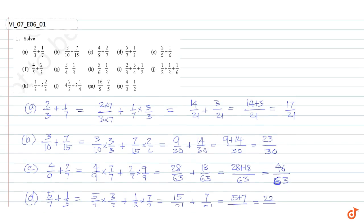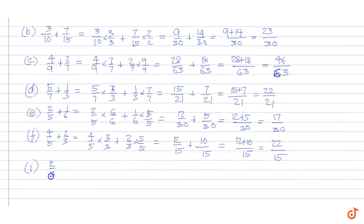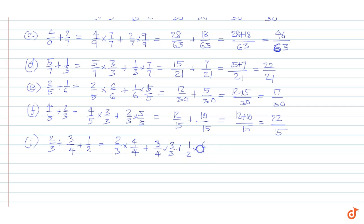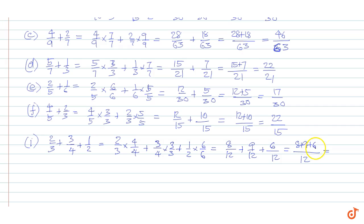Part i: 2/3 plus 3/4 plus 1/2. LCM is 12, so we get 2/3 into 4/4 plus 3/4 into 3/3 plus 1/2 into 6/6, equal to 8/12 plus 9/12 plus 6/12, equal to 8 plus 9 plus 6 by 12, which is equal to 23/12.